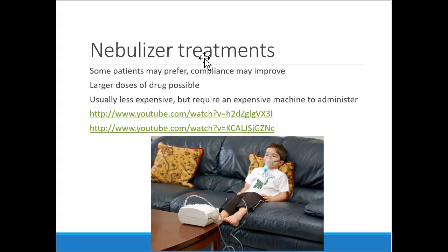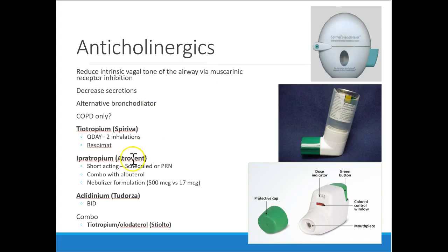Nebulizers are another option — typically used for children who can't use an inhaler, using a mask, or for acutely critically ill patients who need a lot of drug. You can do around-the-clock albuterol and ipratropium nebulization. Ipratropium (Atrovent) is the short-acting anticholinergic and is effective in the acute phase. For an acute asthma exacerbation you'll almost always give DuoNeb, a combination of albuterol and ipratropium, for dual-mechanism bronchodilation.